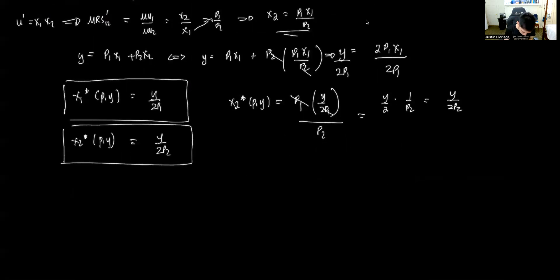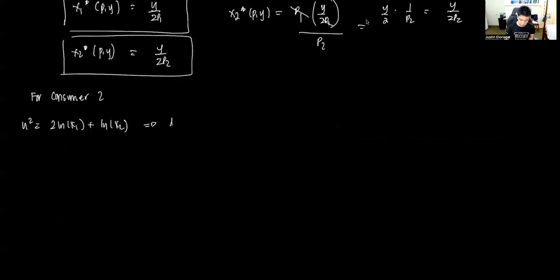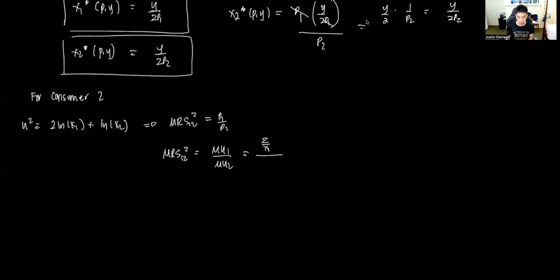For consumer two, recall U2 = 2·ln(x1) + ln(x2). Using the first-order condition, MRS₁₂ equals P1 over P2. The MRS is MU1 over MU2: deriving with respect to x1 gives 2/x1, and with respect to x2 gives 1/x2. This gives MRS = (2/x1) / (1/x2) = 2x2 / x1.